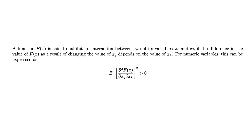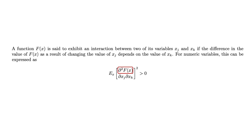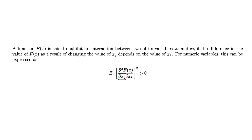For numeric variables, this can be expressed with the formula shown here. The partial derivative can be interpreted as the rate of change of the rate of change of the function with respect to j with respect to k. So if the expected value is zero, then the rate at which the function changes with respect to feature j does not change when feature k changes, and vice versa.